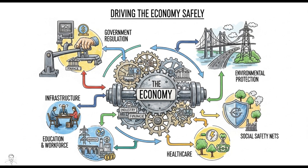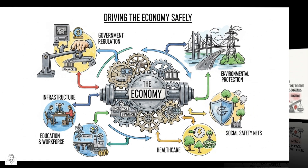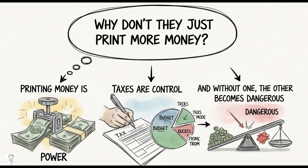Think of taxes like the steering wheel and brakes of a car: the engine is the central bank, the fuel is government spending, and the brakes and direction are taxes. You need the whole system to drive the economy safely. So the next time you hear someone say 'why don't they just print more money' — you know now. Printing money is power; taxes are control. Without one, the other becomes dangerous.